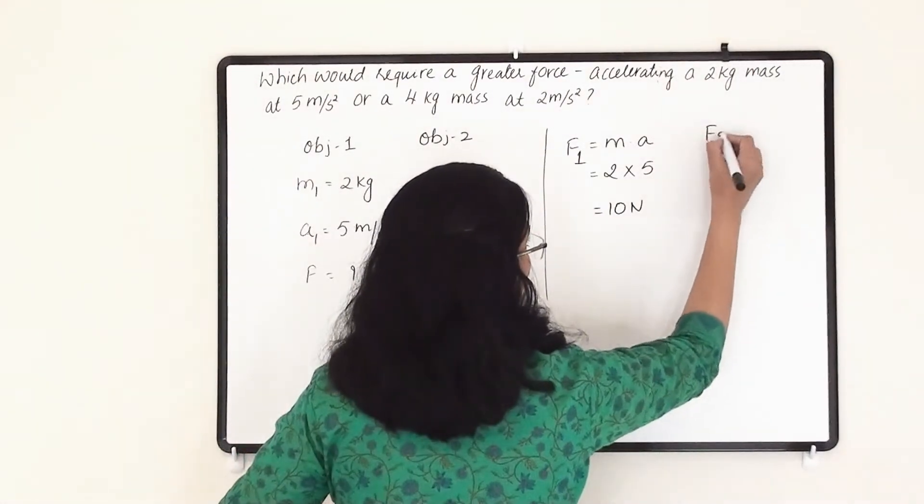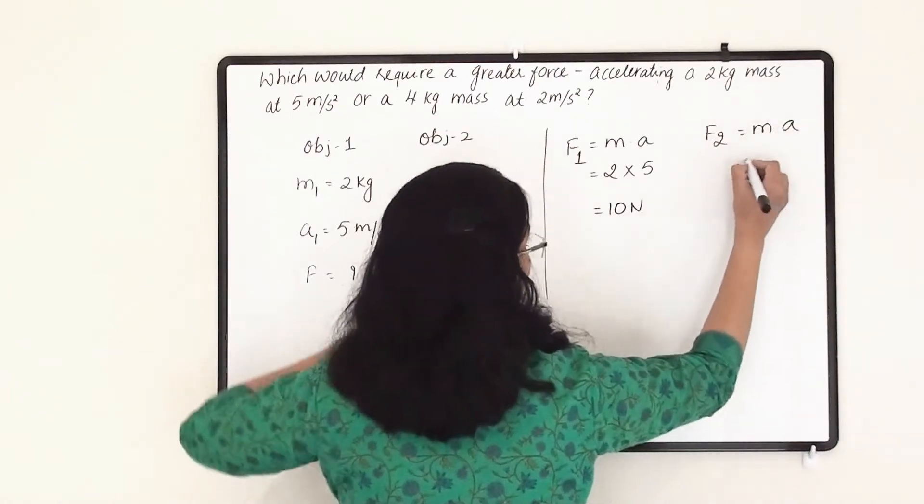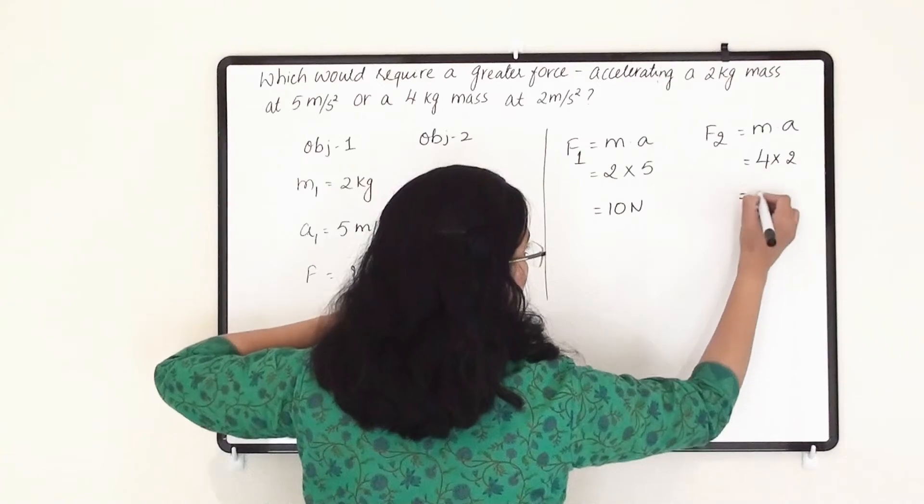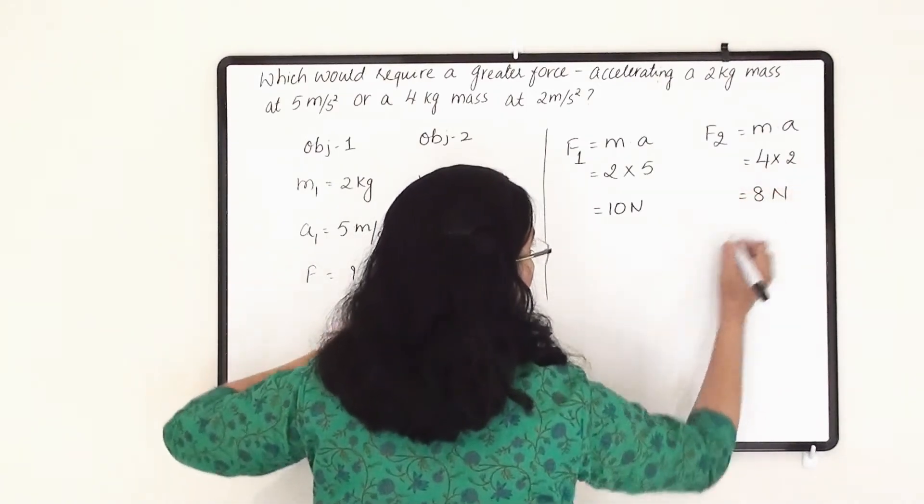Now F2 equals m into a. Here we will get 4 into 2. So here we will get 8 newton force.